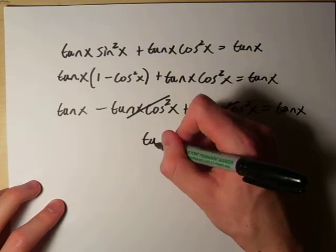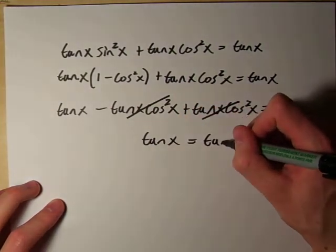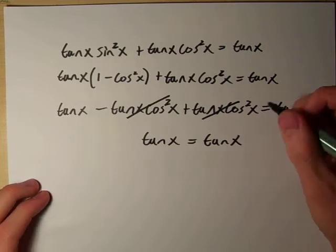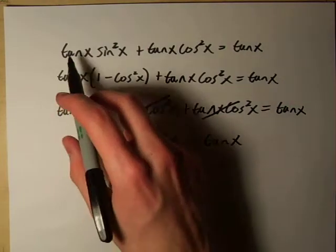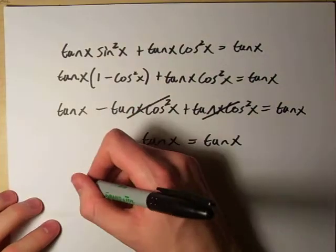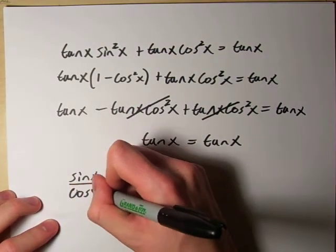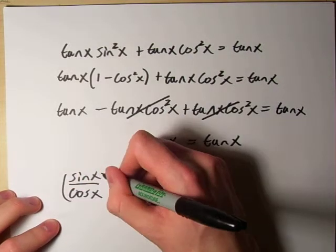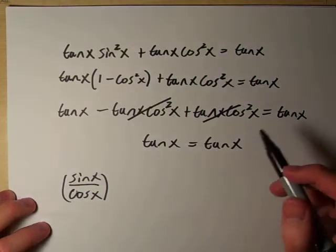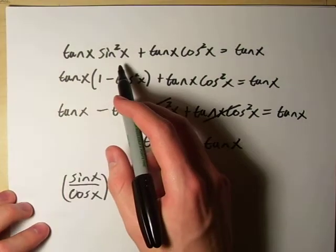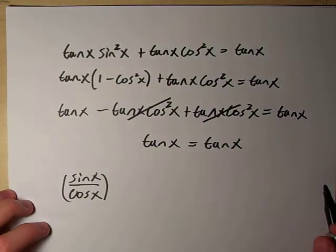All we're left with is tangent x equals tangent x. Most people will instinctively first turn tangent into sine x over cosine x — and it's not wrong, it just takes a few more steps and a little more work. So before you do that, make sure it can't be simplified much more easily, like we've done here.